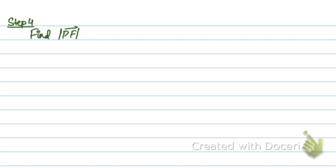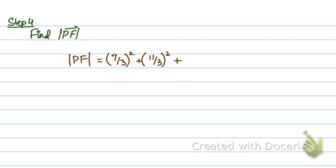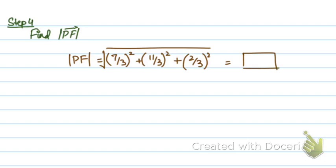Now that I have vector PF, all I need to do is find its magnitude, because the magnitude is the length of the vector, and vector PF goes from the point to the line. So the magnitude of PF is √((7/3)² + (11/3)² + (2/3)²). This final answer is your distance from the point to the line.